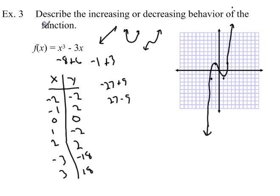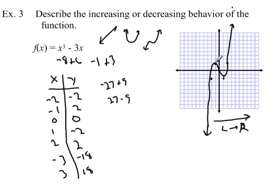Now, the problem asks us to describe the increasing or decreasing behavior. From left to right, the graph goes upward, then downward, then upward again. The key is always thinking left to right — for increasing values of x. As x increases, the y values go up, then down, then up. So this function is increasing for a while, then decreasing, then increasing again.